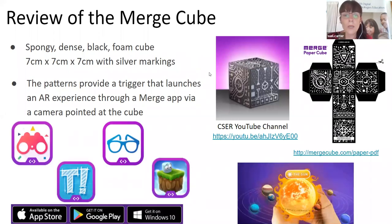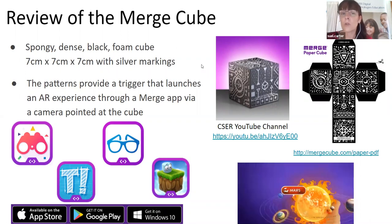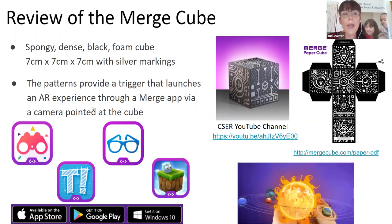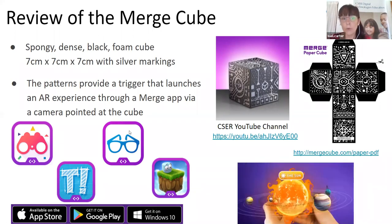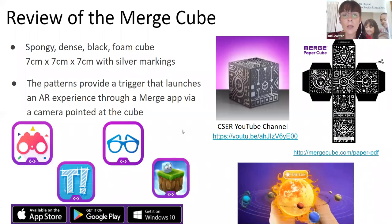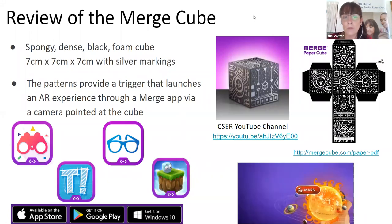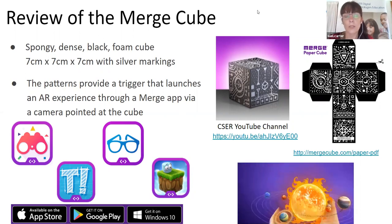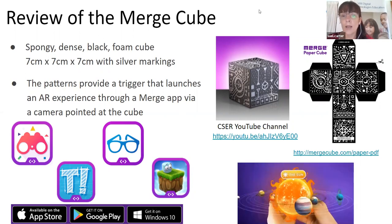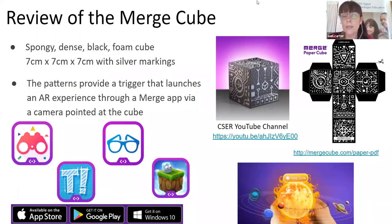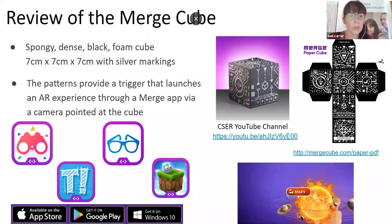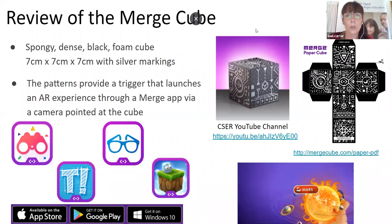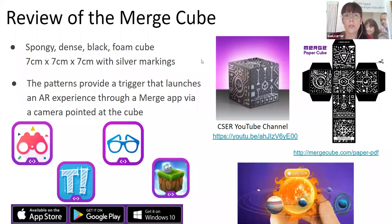In order to see augmented reality, you need to use an app. In our last session we looked at the Explorer app, the Object Viewer app, Things, and Dig — each one offering a different experience for students. One example is a simulation of our galaxy where you can look at different planets and find out more information. These apps are available on the App Store, Google Play, and on Windows 10 as well.